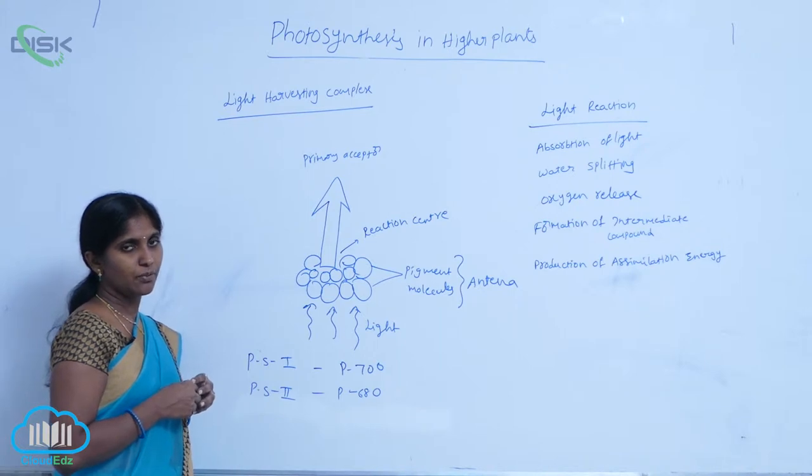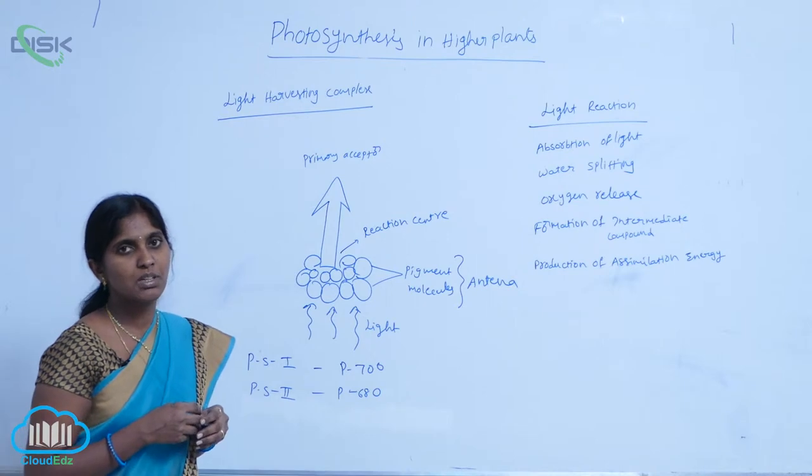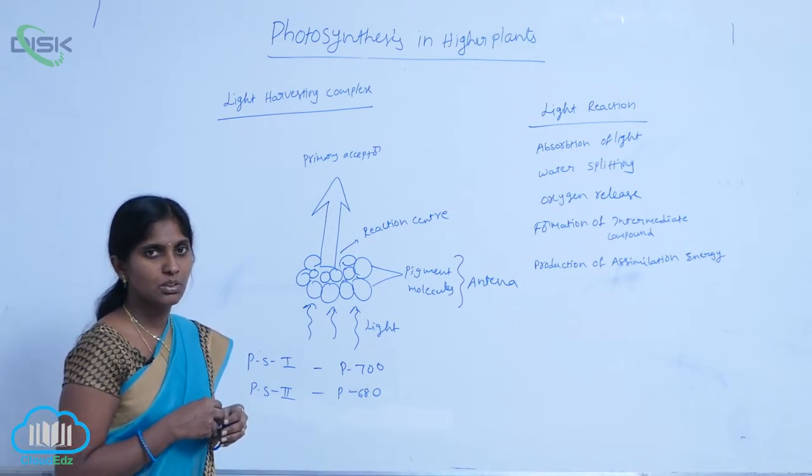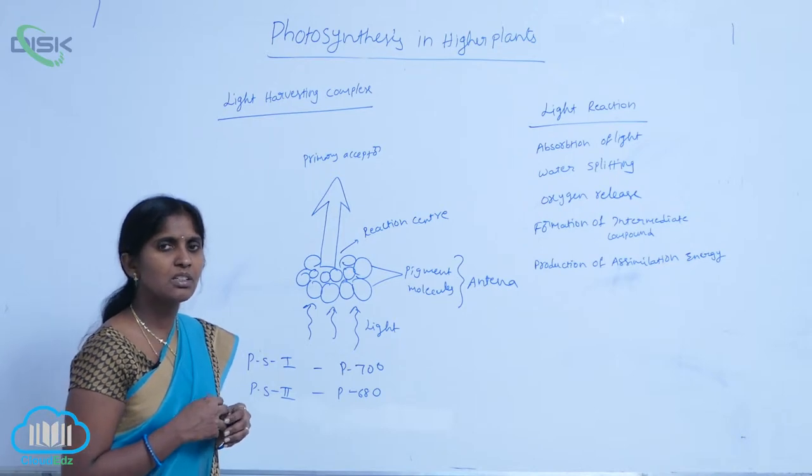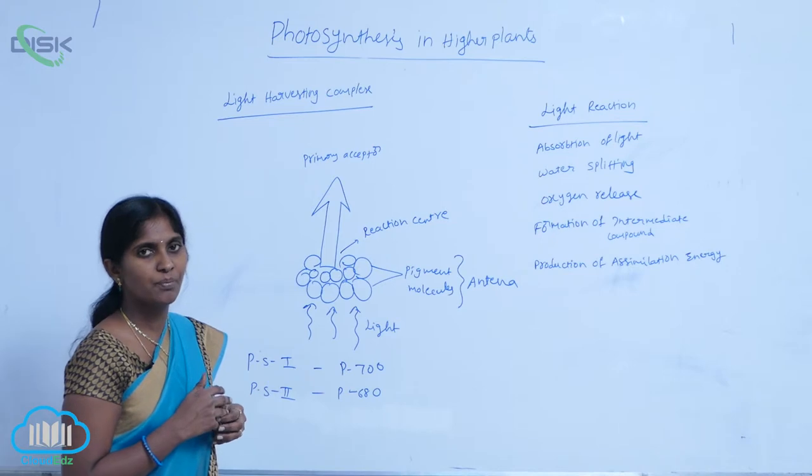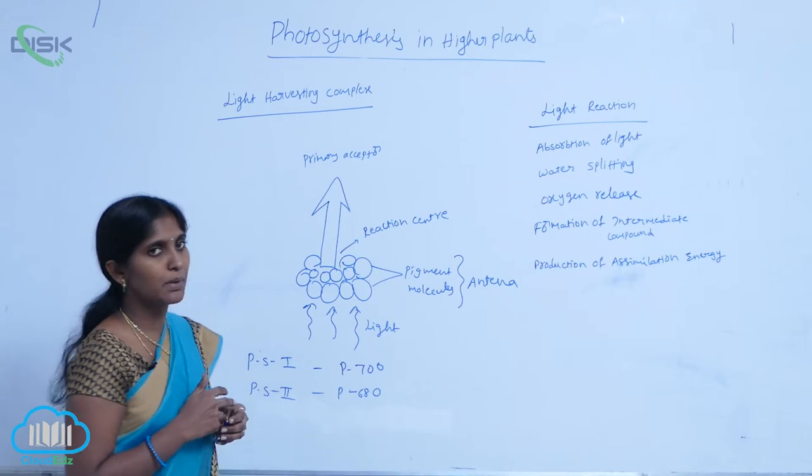In light reactions two photosystems are included: photosystem 1 and photosystem 2. They are the reaction centers for photosynthesis, photophosphorylation. They include light harvesting complex.